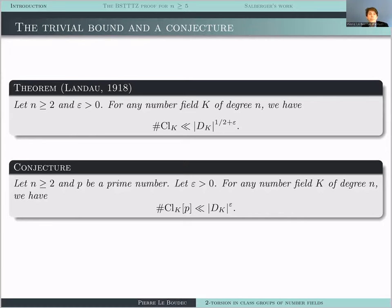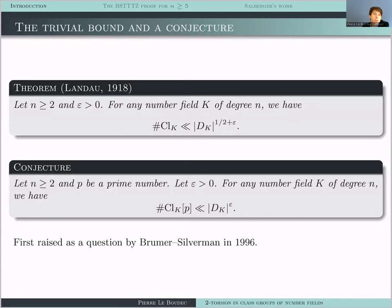The conjecture says that if instead of looking at the full class group of K, you look at the P-torsion subgroup for a fixed prime P, then this quantity should be much, much smaller — in particular it should grow more slowly than any power of the absolute value of the discriminant. The constant may depend on N, P, and epsilon, but we don't care about those dependencies. This conjecture was first raised as a question by Brumer and Silverman in 1996, then appeared in the literature in the nineties in work of Duke and others, but for some time there were absolutely no results close to this — it became a folklore problem which is really hard.